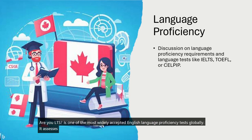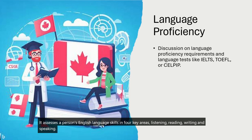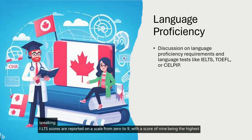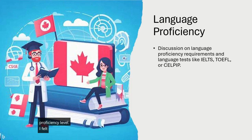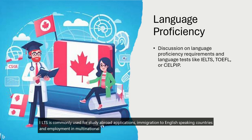IELTS assesses a person's English language skills in four key areas: listening, reading, writing, and speaking. IELTS scores are reported on a scale from 0 to 9, with a score of 9 being the highest proficiency level. IELTS is commonly used for study abroad applications, immigration to English-speaking countries, and employment in multinational organizations.